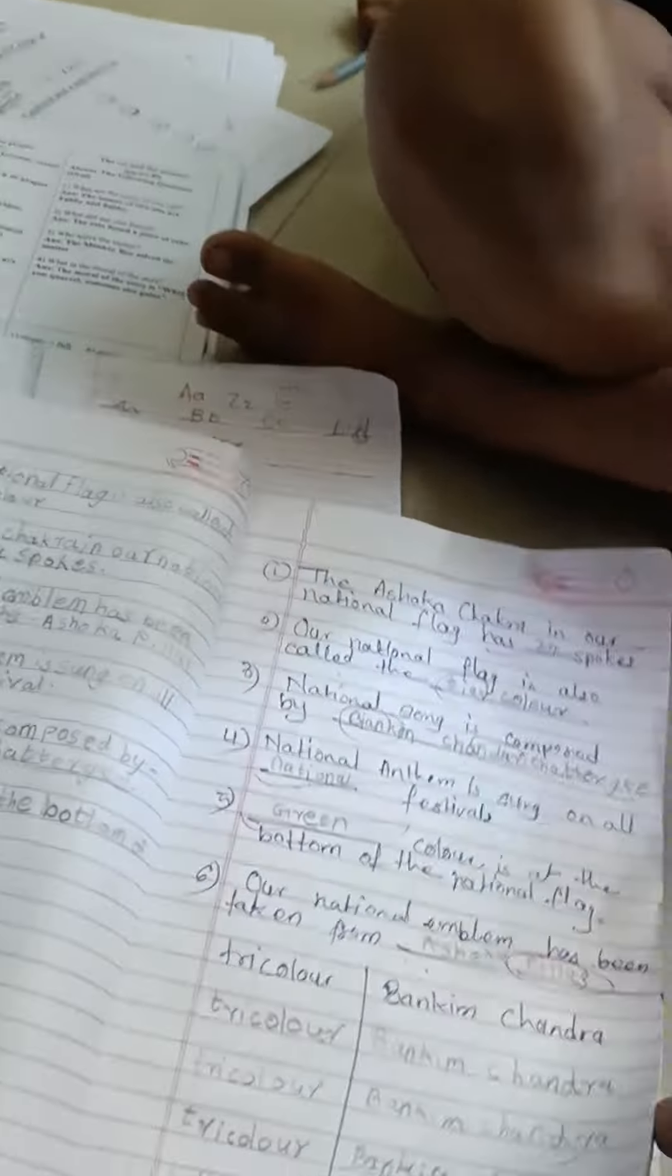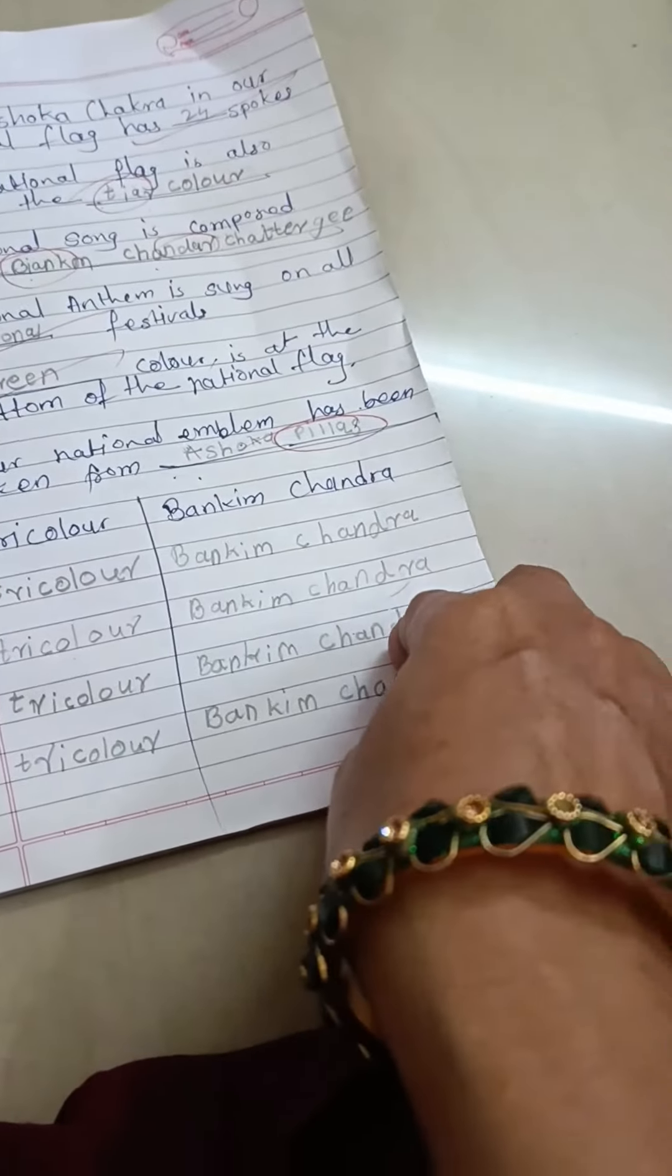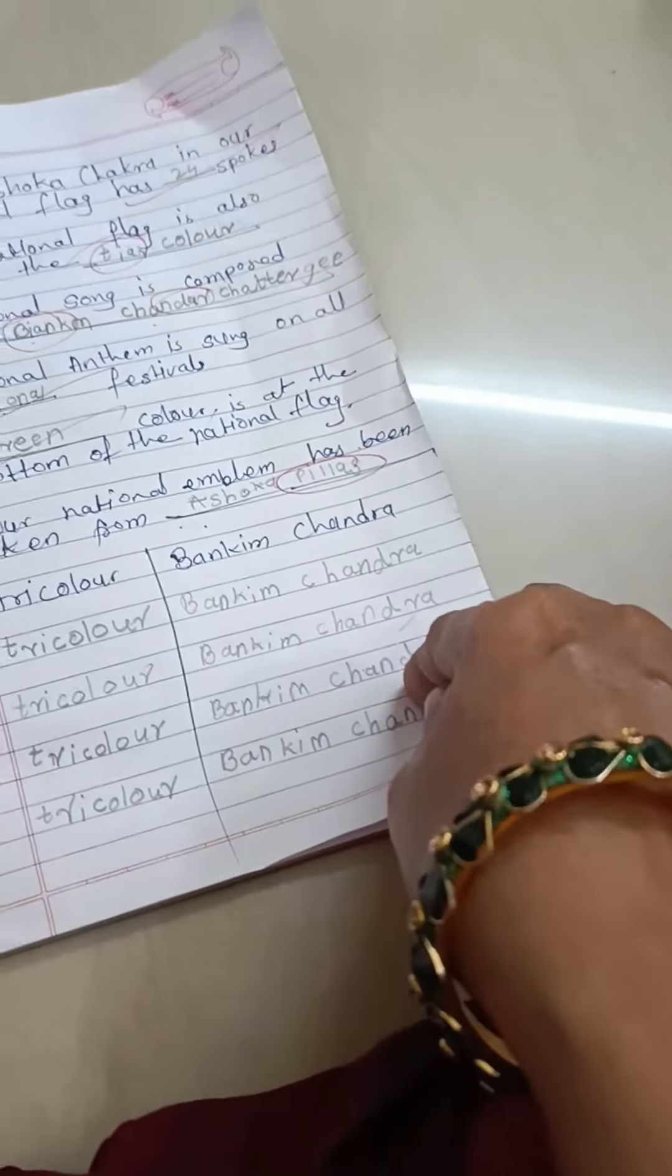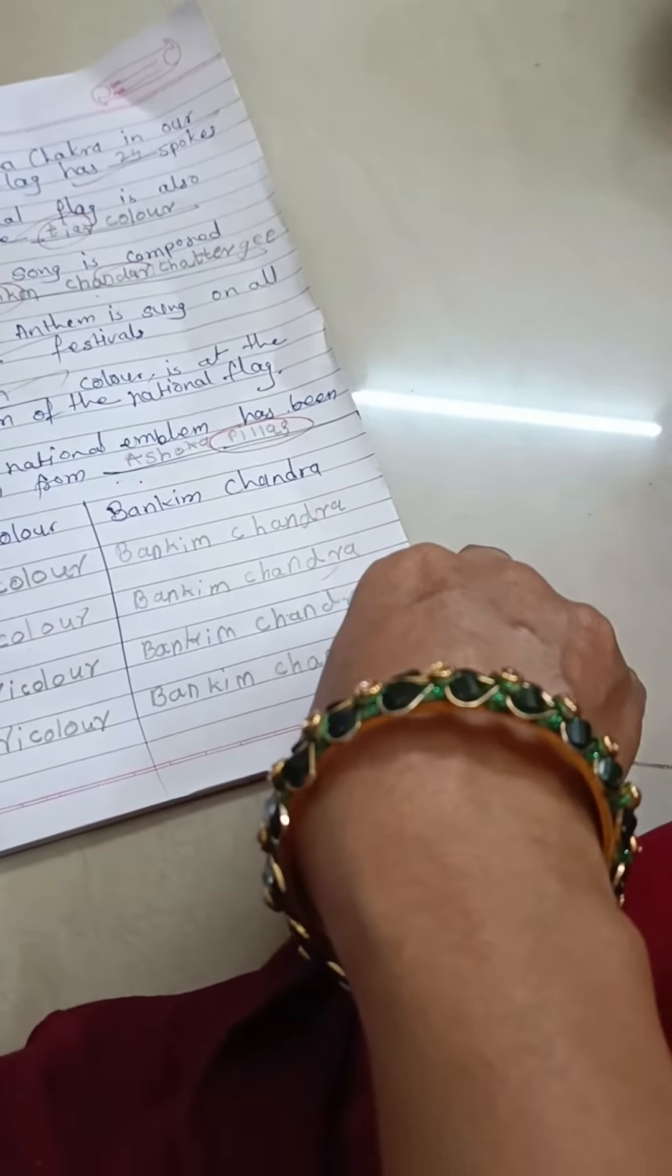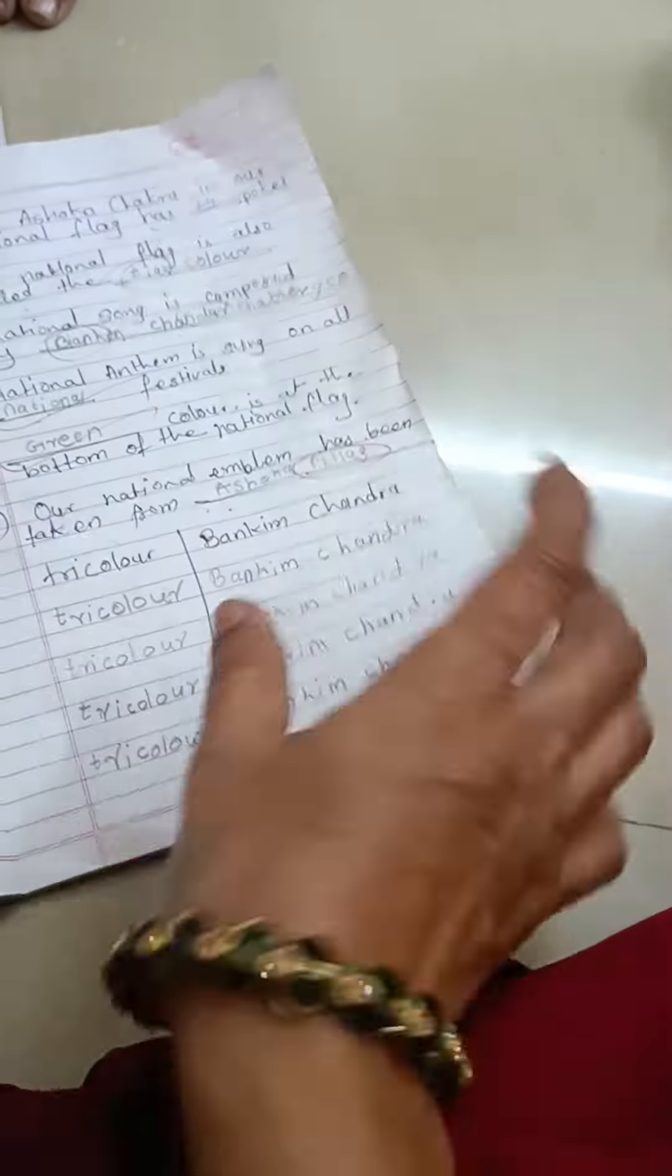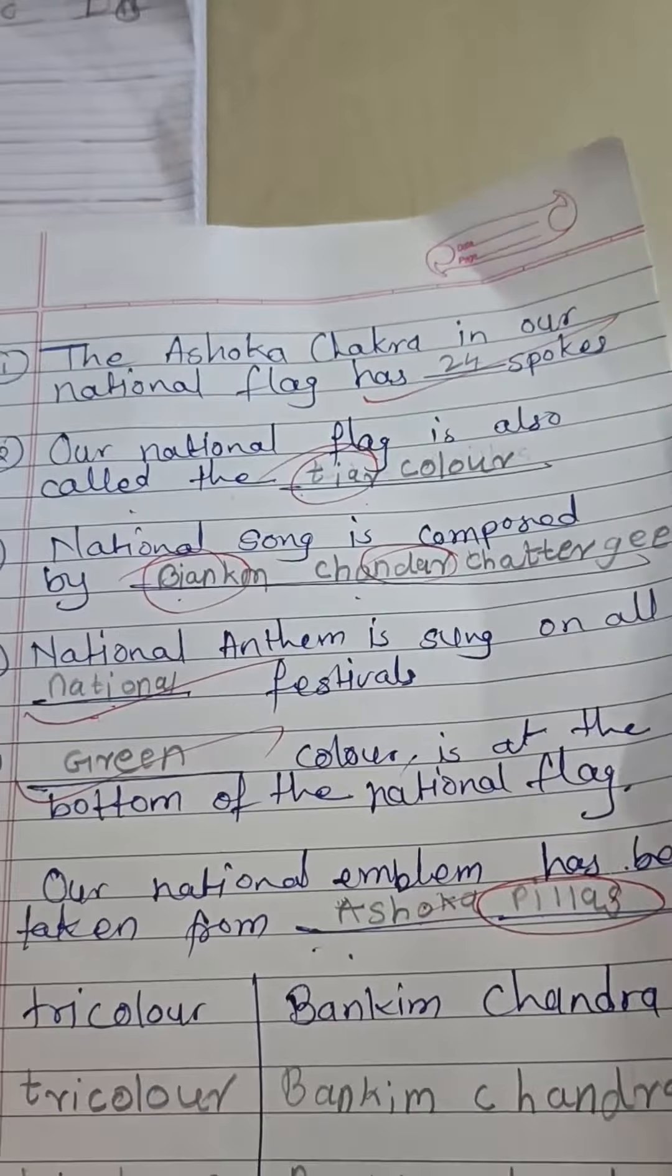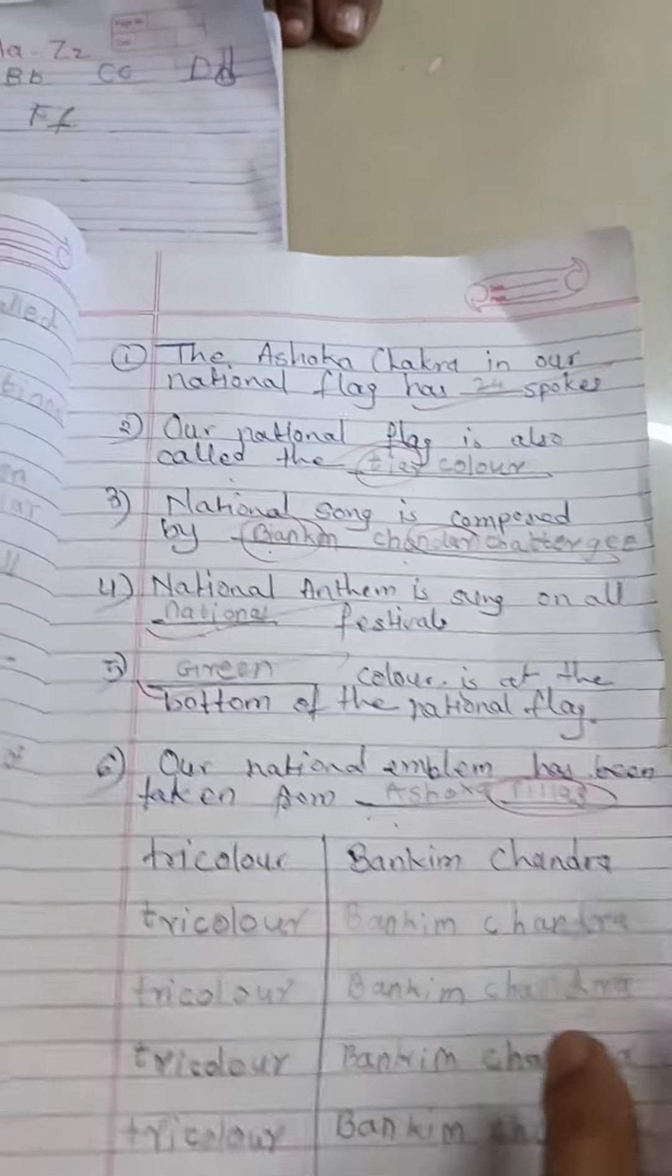Haan, bolo. Tricolor ka spelling T-R-I, tricolor C-O-L-O-U-R. Good. Ban Kim Chandra B-A-N, B-A-N-D, B-A-N-K-I-M, Kim Chandra C-H-A-N-D-R-A. Yes, good. Pillar P-I double L-A-R, pillar. Very good.